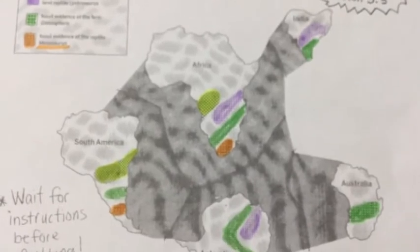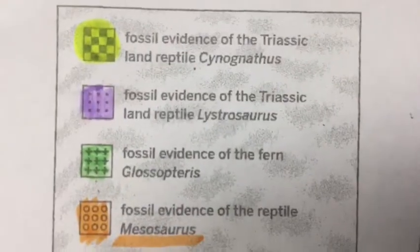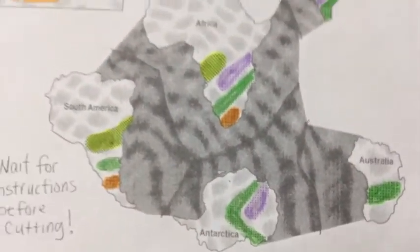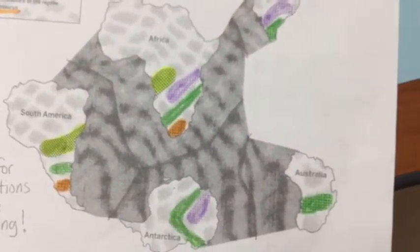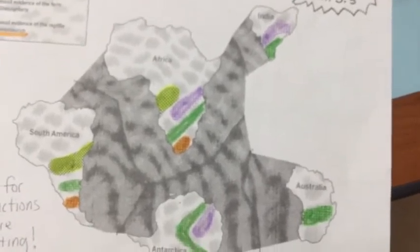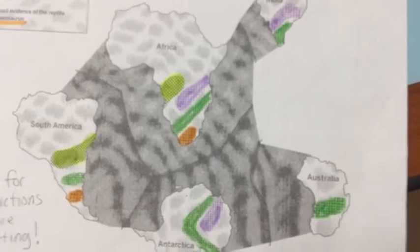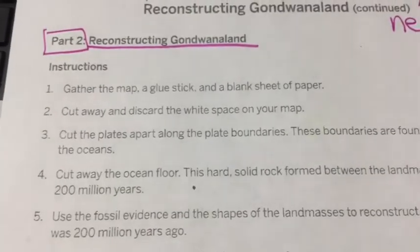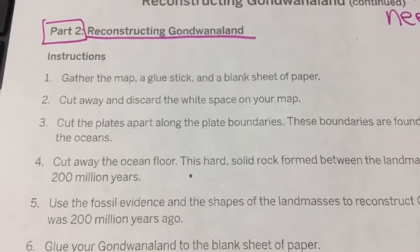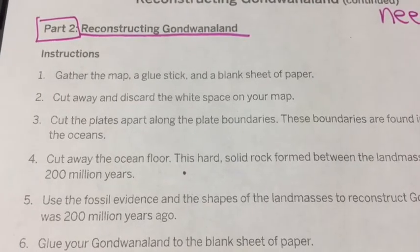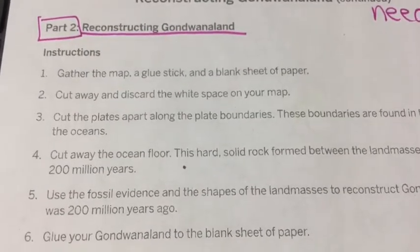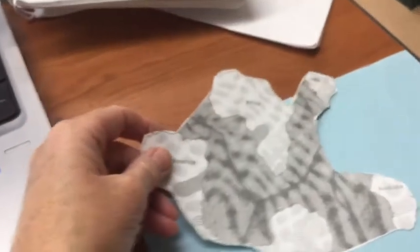Let me pan out and you can see that I have matched the patterns. I have found out where on the plates those fossils have been found — that is what the colors represent: that paleontologists have found fossils in those locations. We are on part two, step number two, which says cut away and discard the white space on your map, so you'll have to do some cutting and get rid of all that white space until your paper looks like this.